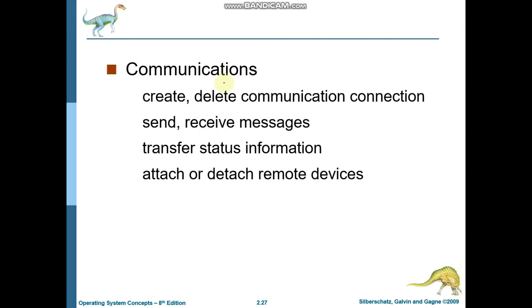Next is the communication system call. Under this, the activities include: create or delete a communication connection, perform send and receive operations, and transfer status information. When one process sends information to another process, status information is shown telling you that your data successfully reached its destination. Additionally, attaching and de-attaching remote devices is also a major activity under the communication system call.